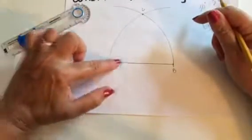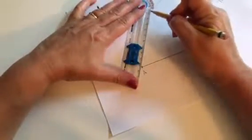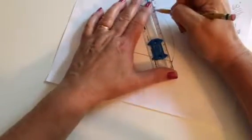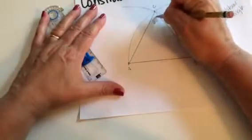It's the same distance from A as it is from B. I'm going to connect these points, C to A using the straight edge, and C to B using the straight edge. And I know that each of these angles is 60 degrees.